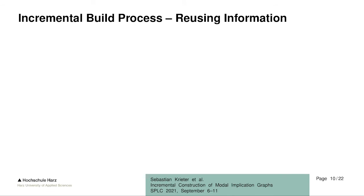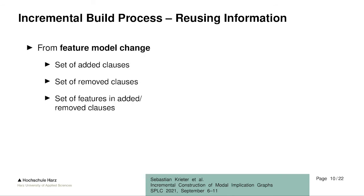What kind of information can we use to speed up the operations? First, we can use information from the feature model change — differentiating between clauses added to the feature model versus clauses removed. Modified clauses are a combination of both: a clause that was removed and then added slightly differently. From these clauses, we can also infer a set of features that appear in added or removed clauses, which means these features are more likely to be involved in any anomalies.